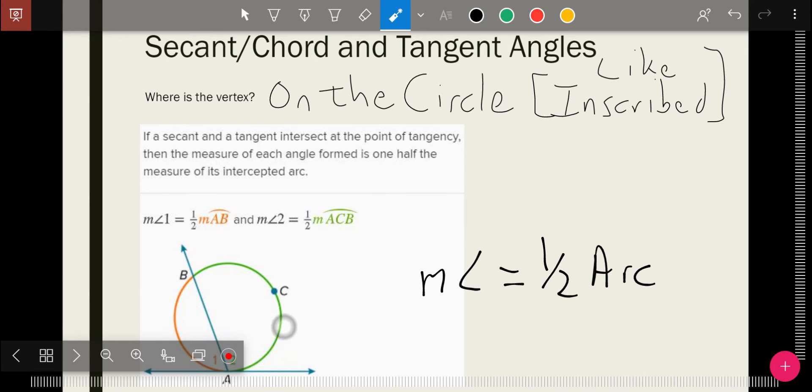This points down here, this whole arc from the bottom of that ray to where it hits the ray again, that whole arc. Whatever that measure is, half of that would be angle two. And the same thing on the other side. Whatever that arc is, half of that would be angle one because the vertex is on the circle.